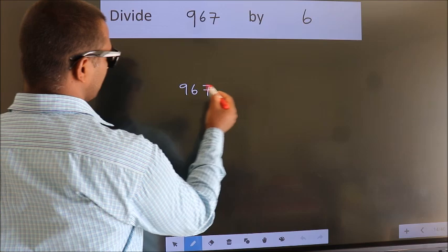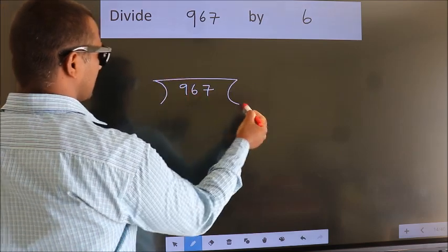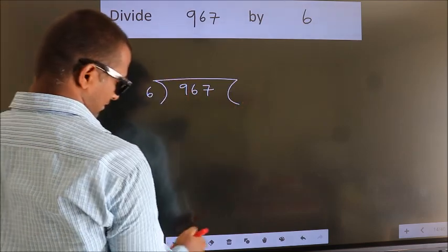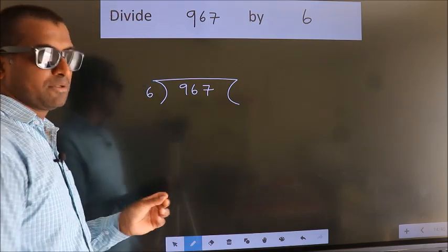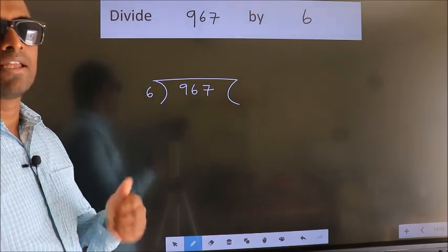967 here, 6 here. This is your step 1. Next.